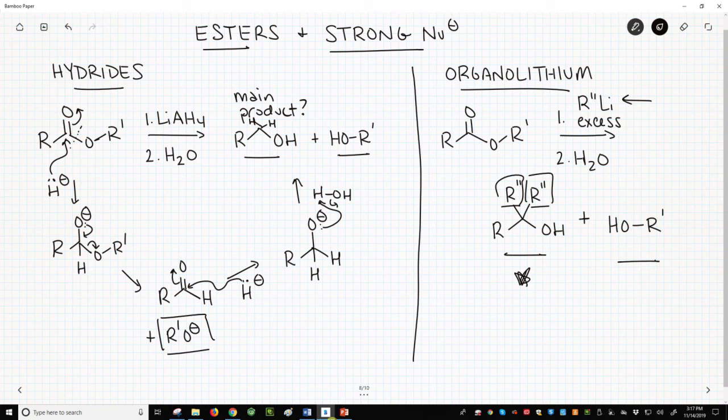So the reaction of esters with hydrides or organometallic reagents ultimately involves two nucleophilic additions and two tetrahedral intermediates. The reaction forms two alcohol products. Normally, the alcohol from the ester carbonyl is the desired product.